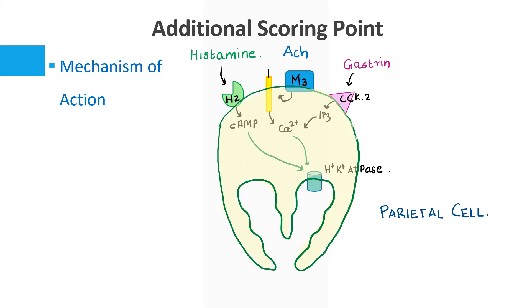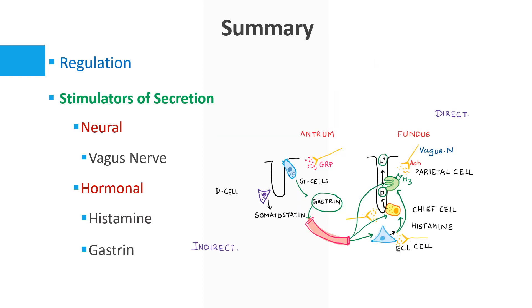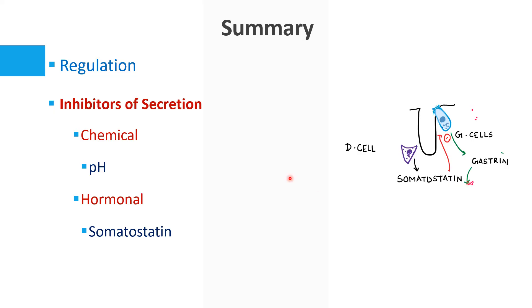To summarize the regulation of acid secretion: stimulators are neural and hormonal. The vagus nerve acts directly on three cell types and indirectly via gastrin. The hormones are histamine and gastrin. Inhibitors include the chemical factor pH causing autoregulation, and somatostatin which decreases gastrin secretion. All three stimulatory mediators ultimately activate the H+/K+ ATPase pump to produce gastric acid.